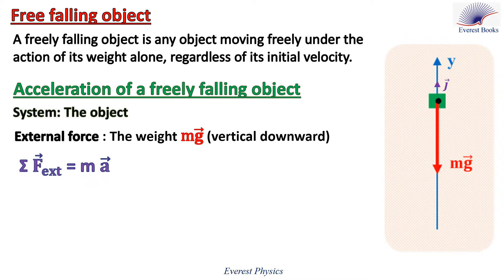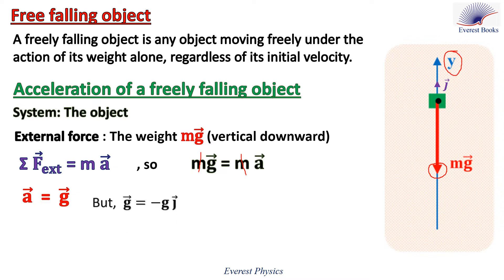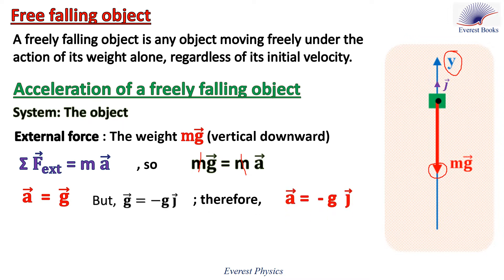Now apply Newton's second law. The sum of the external forces acting on this object equals the mass times the acceleration of the object. Replace the sum of the external forces by Mg. So Mg equals Ma. Divide by M on both sides. Then the acceleration of a freely falling object equals g. Look at the figure. g is directed vertically downward. If Y is directed positively upward, then relative to this Y axis, g equals minus g·j. So relative to this axis, a equals minus g·j.